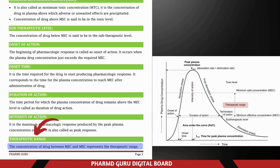Therapeutic range is the concentration of drug between MEC and MSC. Within this range, the drug is both safe and effective. Below this range, the drug is ineffective; above this range, it is toxic. For example, for insulin, the therapeutic range ensures glucose levels are controlled without causing hypoglycemia or hyperglycemia.